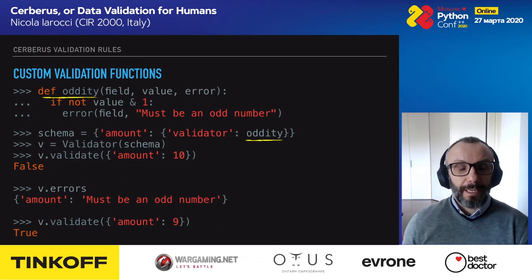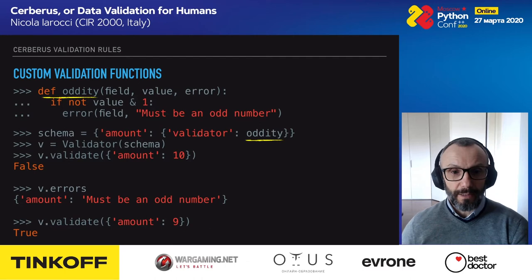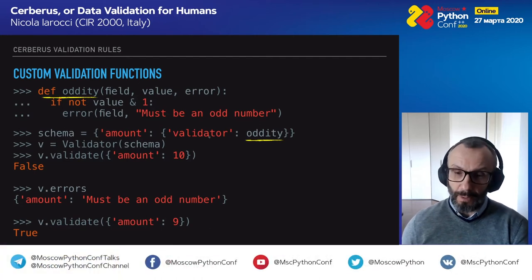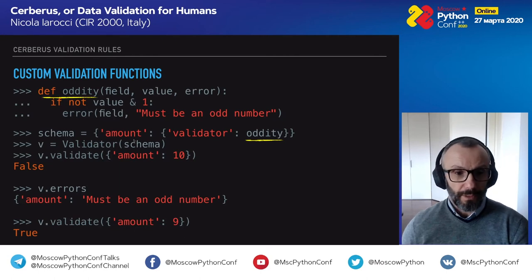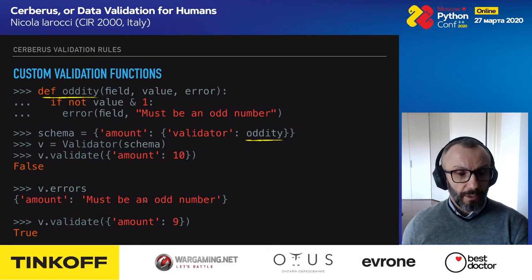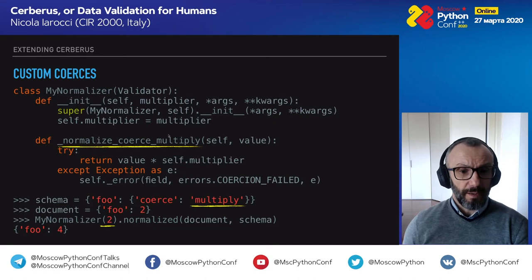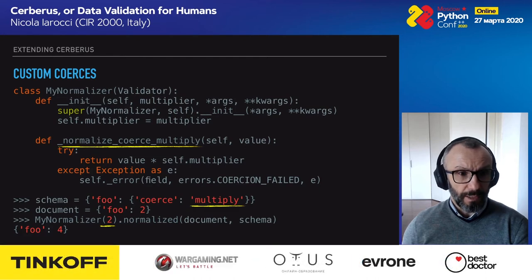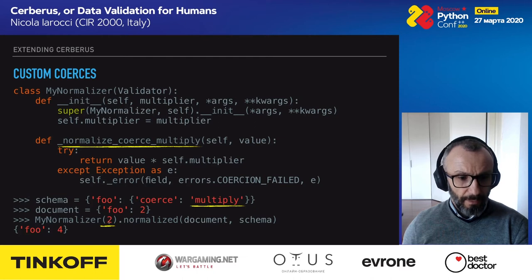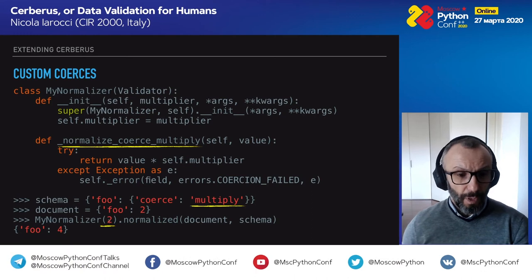The most powerful extensibility option is adding a custom validator function directly to a field. You define your function and attach it as a validator to the field. You can do the same with coercion — in this advanced example, we have a custom validator subclass whose constructor takes a multiplier. Every time a field comes in it gets multiplied by the provided factor, so an input value of 2 with a multiplier of 2 becomes 4. This shows how flexible your validator can be.